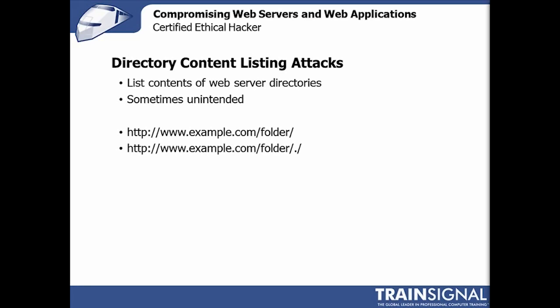Not quite as catastrophic but potentially useful to an ethical hacker is being able to enumerate the contents of a directory on a web server. Oftentimes an administrator forgets to turn off directory listing, and you can use one of the contexts listed here to actually list the files in a folder. This doesn't mean you can get outside of the web root — it just means you can list the files and select which ones to access. It's not always a flaw; many web servers intentionally allow this so clients can browse files or images, kind of like an FTP server.